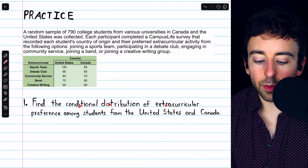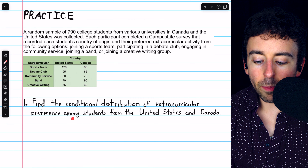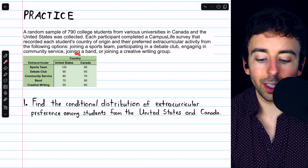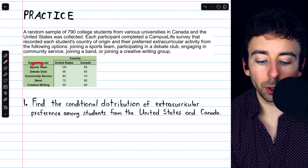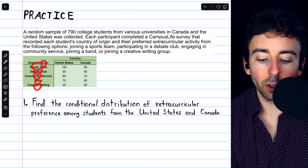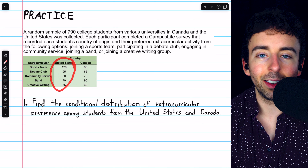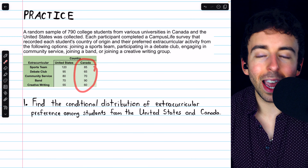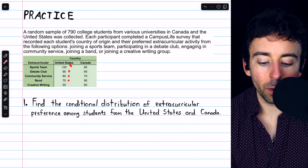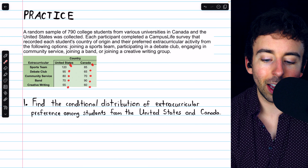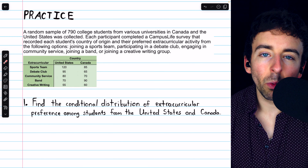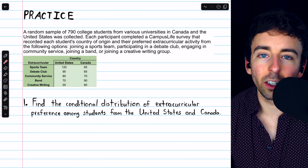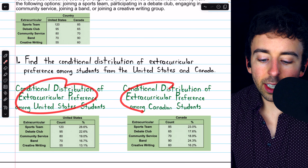First, we're asked to find the conditional distribution of extracurricular preference among students from the United States and Canada. The conditional variable is the country. We're going to look at the number of people who preferred each extracurricular activity given that they're from the United States, and then separately, the conditional distribution given that they are from Canada. Percentages are more useful when we're trying to compare categorical variables, since the number of people in each category could be different.